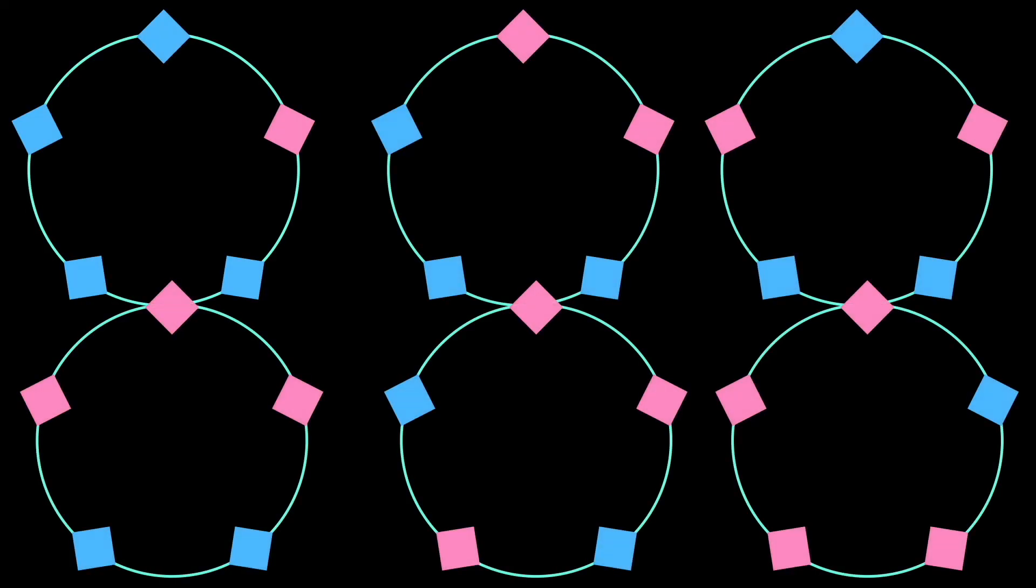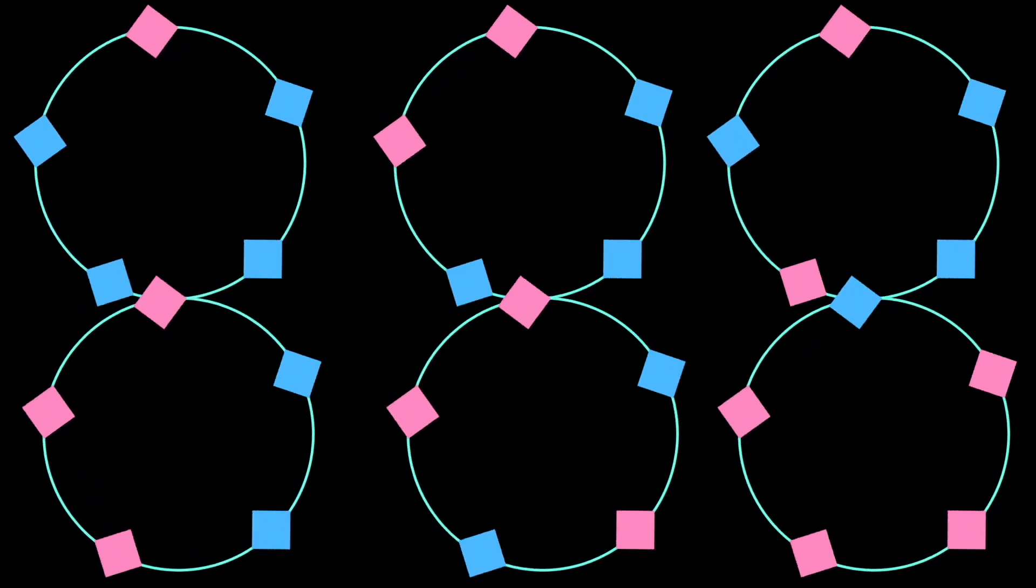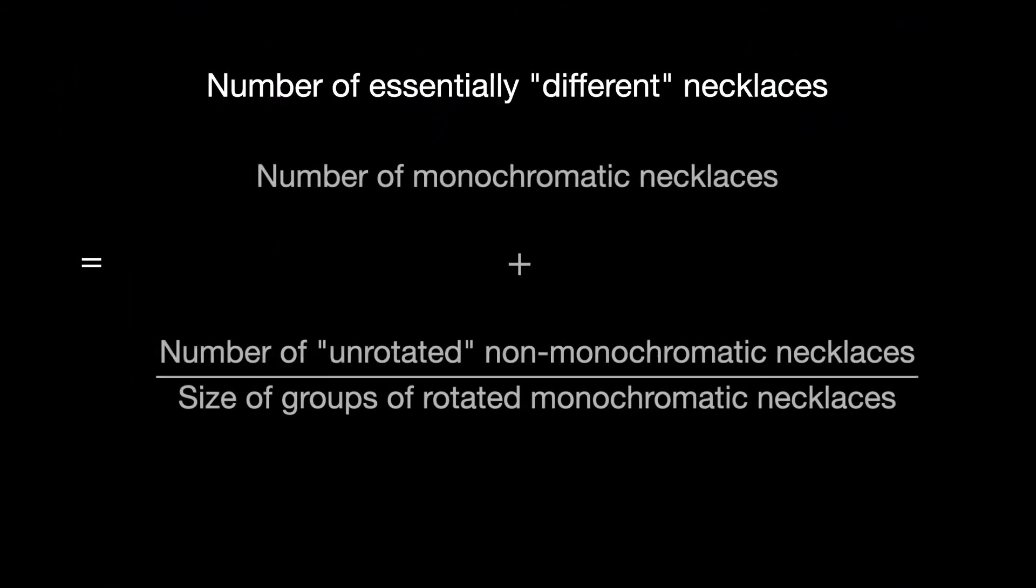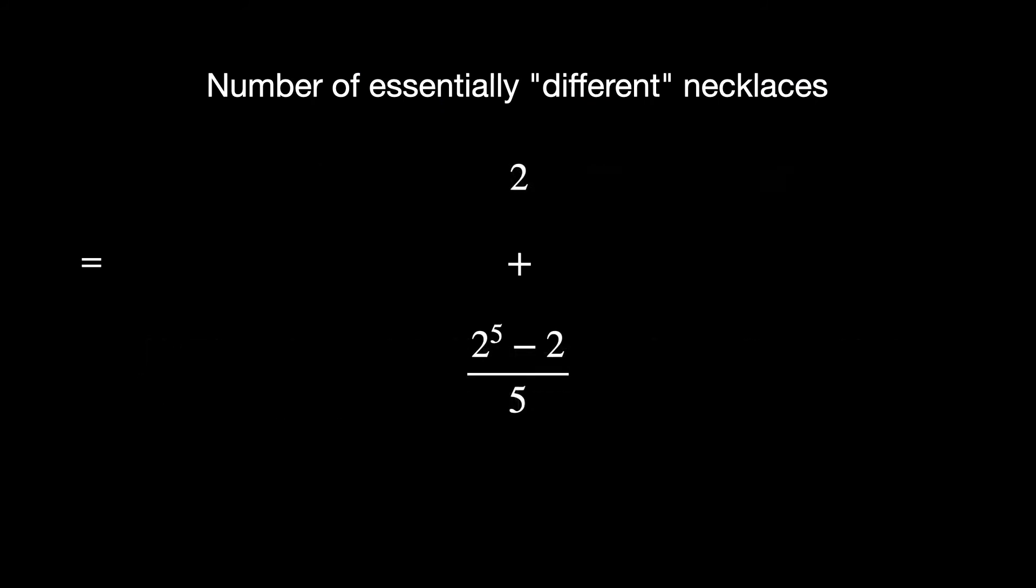Here are those six groups. Thus, all in all, we find there are eight different necklaces composed of five beads of two available colors.